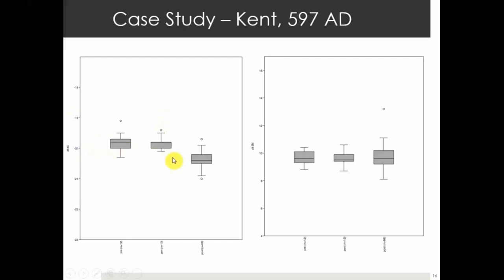I looked at Kent specifically because this is where the first missionaries appear. Basically comparing pre-, around the same time as, and post-missionary activity, we see a drop in carbon values with no real drop in nitrogen. Before this paper came out I wasn't sure what to make of it, but one way to explain the carbon drop is a massive increase in freshwater fish consumption without changing the amount of protein overall — so they're changing their protein source. Is this shift post-597 AD possibly to do with Christianization?